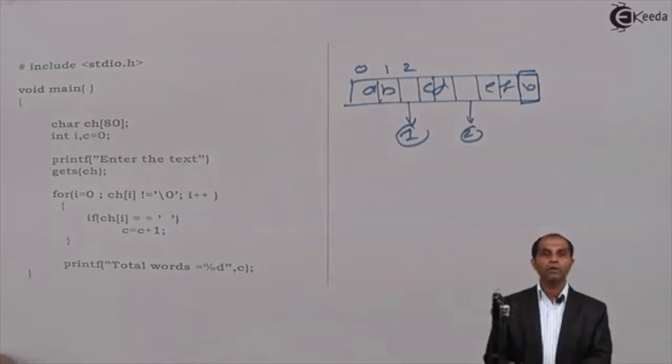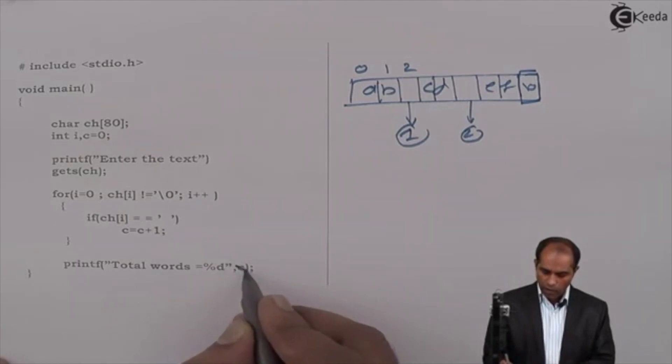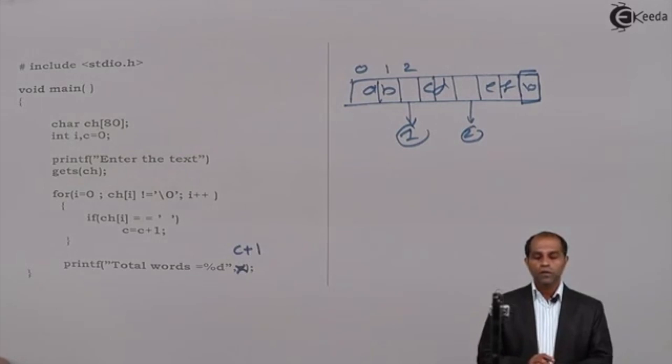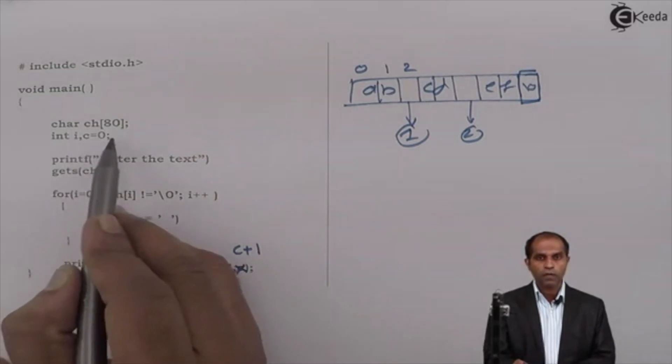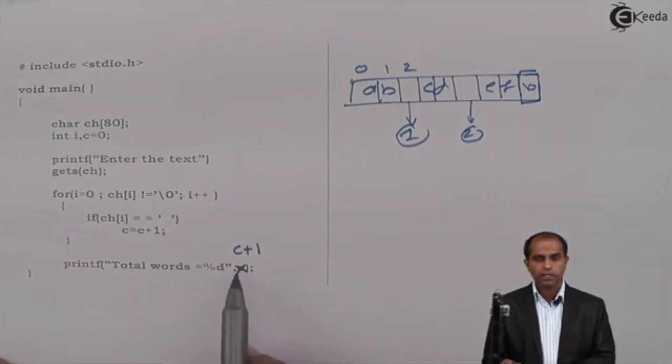But finally, how many words are there? Three words. So in that case, what I'm going to do is, I'm going to cut this particular C and say it has C plus one. So the value or total number of words is C plus one. Or the other way is, you can set C as one, say C equal to C plus one and here you contain only C at this place.